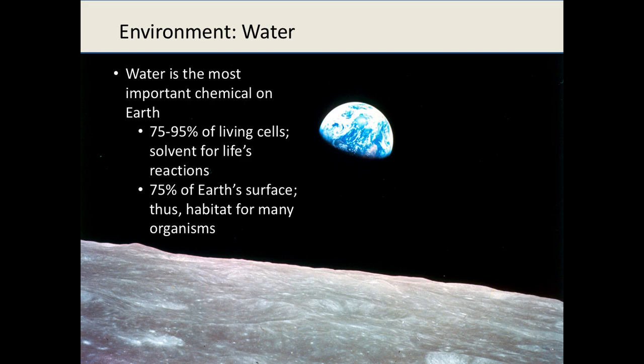Water is really important on earth. As Carl Sagan described, earth is a pale blue dot. Viewed from space, it doesn't look green, white, or brown — it's mostly water. 75% of the earth's surface is covered by water, so it's a habitat for a vast array of organisms, and as ecologists we need to understand this habitat and its importance.